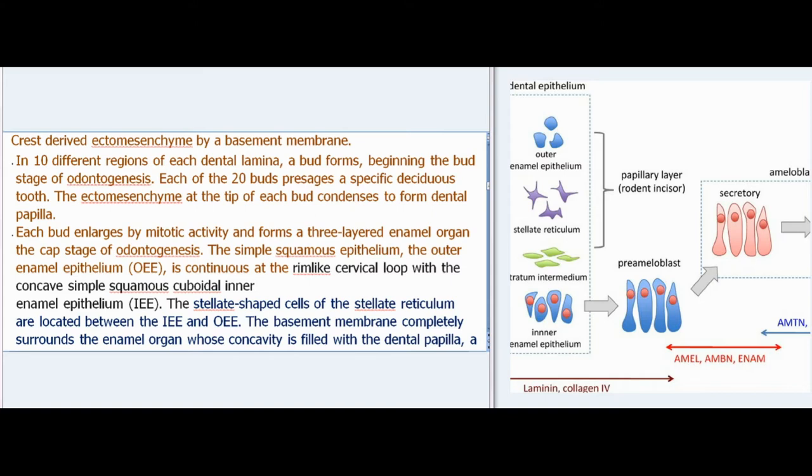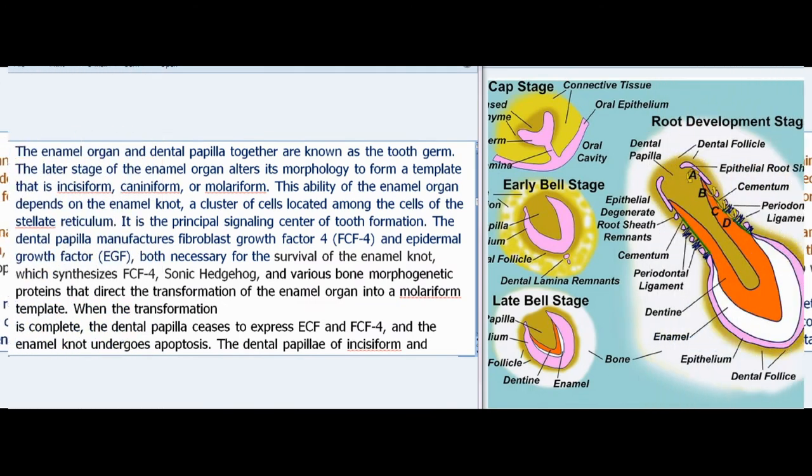The simple squamous outer enamel epithelium (OEE) is continuous at the rim-like cervical loop with the concave simple squamous-cuboidal inner enamel epithelium (IEE). The stellate-shaped cells of the stellate reticulum are located between the IEE and OEE. The basement membrane completely surrounds the enamel organ, whose concavity is filled with the dental papilla — a well-vascularized ectomesenchyme. The enamel organ and dental papilla together are known as the tooth germ.